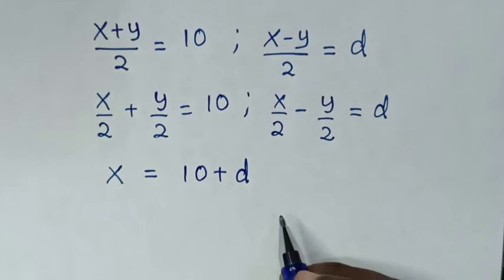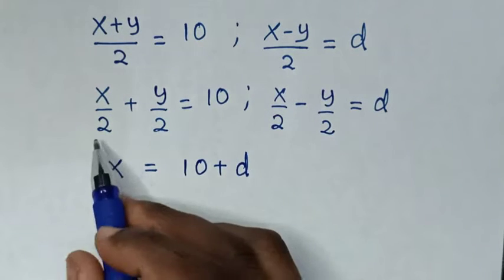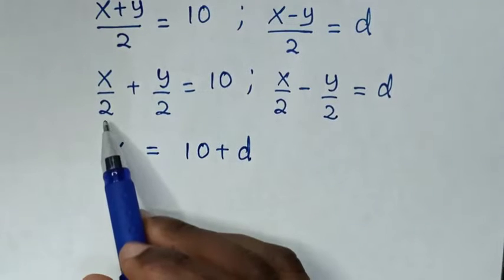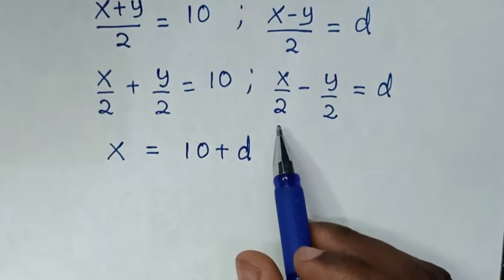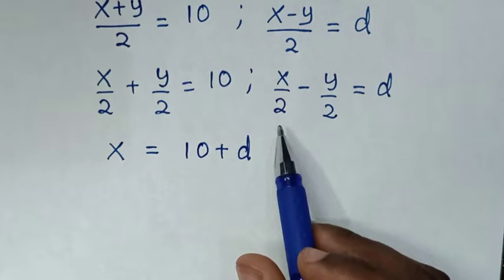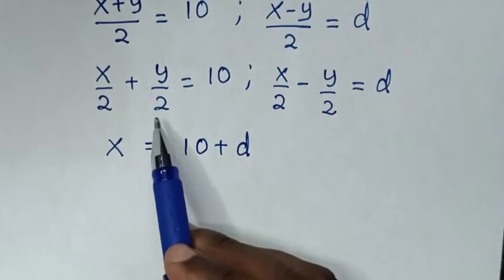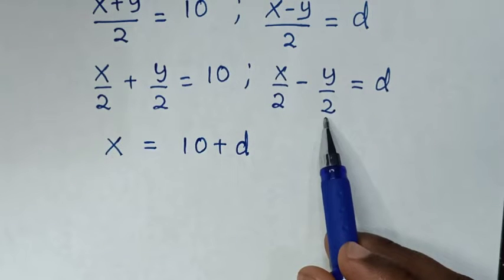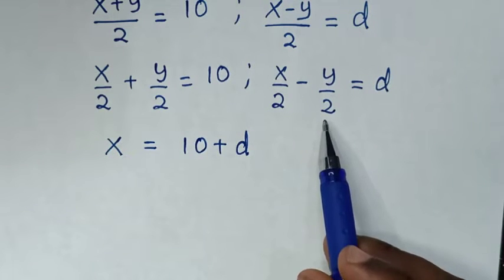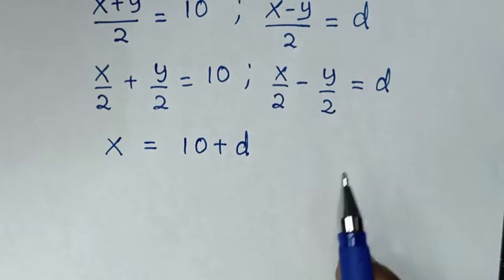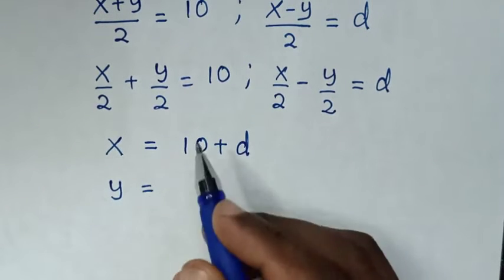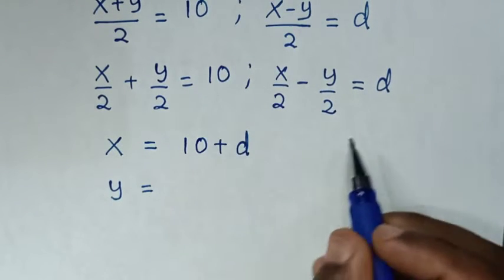Then in the next step we take the first equation and subtract the second equation. So x over 2 minus x over 2 is 0. Then plus y over 2 minus negative y over 2, it will be y over 2 plus y over 2, which gives y is equal to 10 minus d.